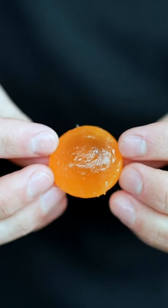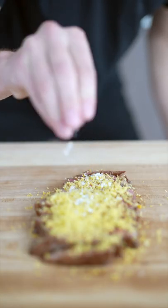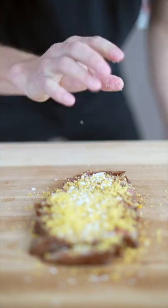You know what these kind of look like? Apricots. Grate your yolk over a Japanese A5 Wagyu. Now hit that with just a little bit of flaky salt and you're ready to eat. That's unbelievable.